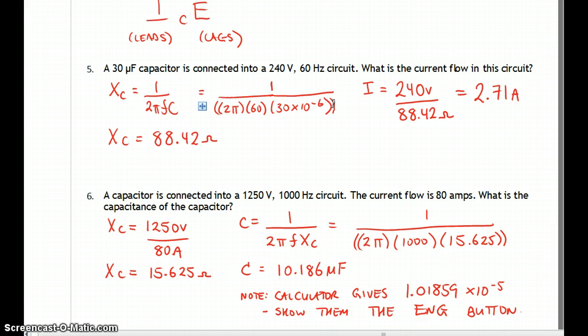Now your calculator, you can note here that calculator may give you 1.01859 times 10 to the negative 5. You may have the engineering button, ENG, on your calculator. And by pressing that, it will simply move it one decimal place and give you the engineering format for that answer.